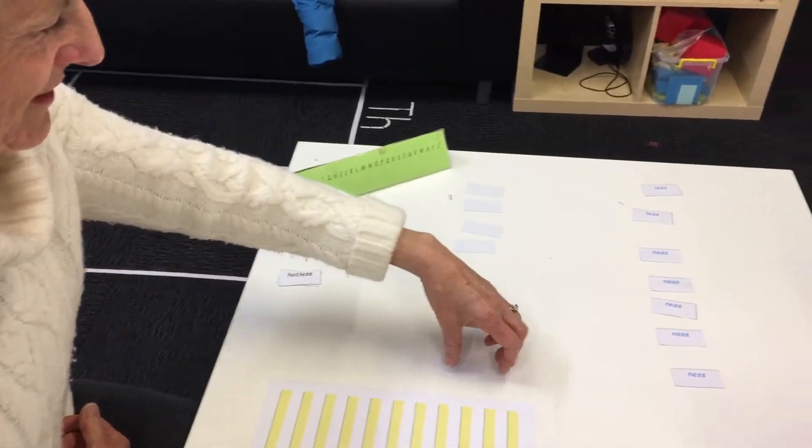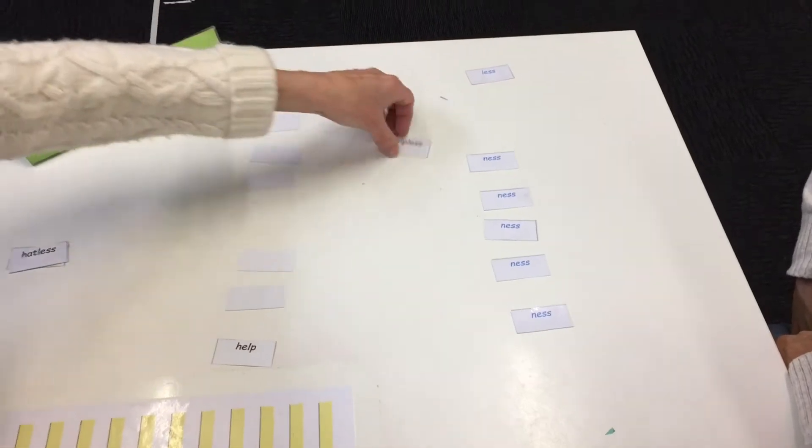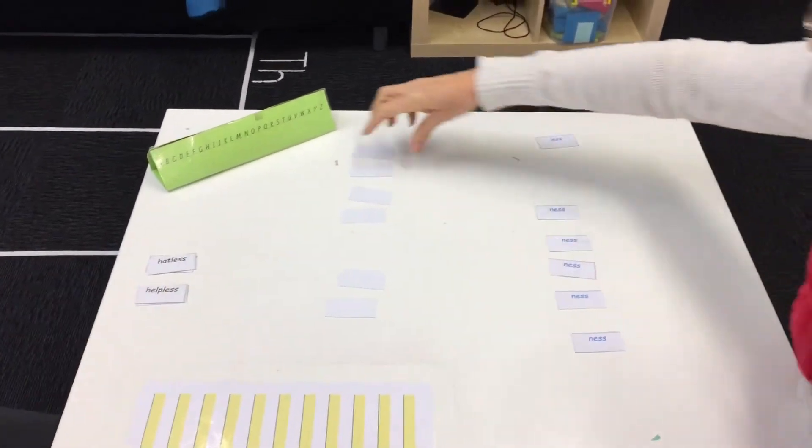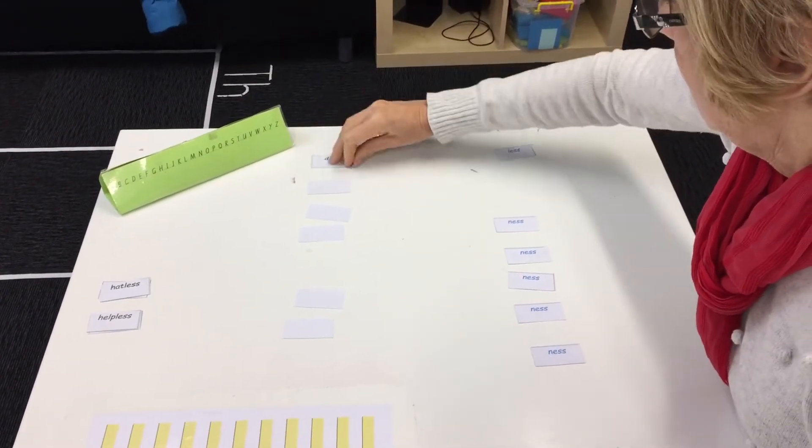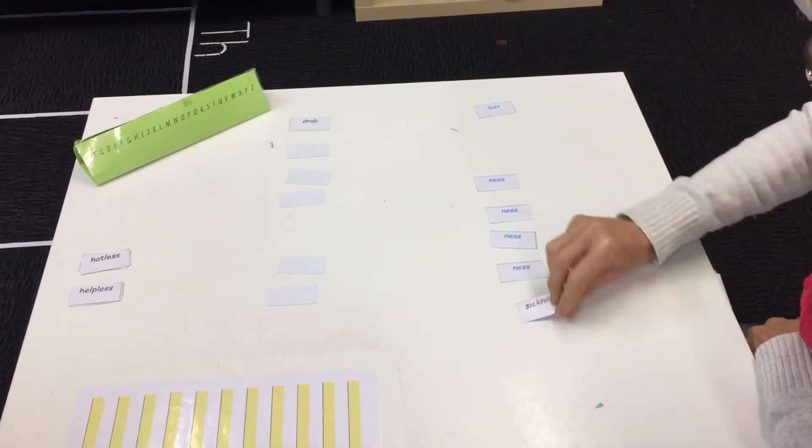That makes it easy. So it does make it easy. Help, helpless, helpless. Okay. Drab, drabness, sickness.